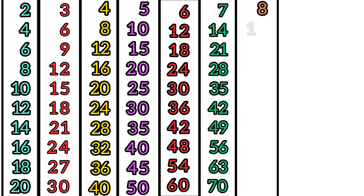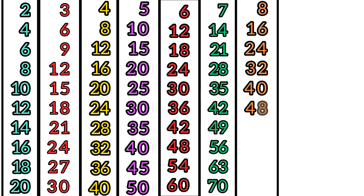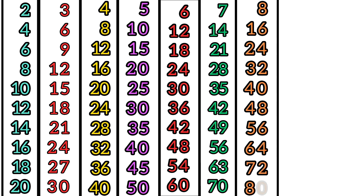8 times tables. 8 times 1 is 8. 8 times 2 is 16. 8 times 3 is 24. 8 times 4 is 32. 8 times 5 is 40. 8 times 6 is 48. 8 times 7 is 56. 8 times 8 is 64. 8 times 9 is 72. 8 times 10 is 80.